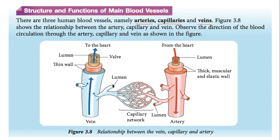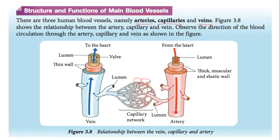The artery receives oxygenated blood from the heart and transports it to the rest of the body. The capillary connects the artery and vein. At the capillary network, gaseous exchange and nutrient transfer occur because capillaries surround the body cells. The capillary receives oxygenated blood from the artery, and oxygen diffuses into the body cells for cellular respiration. Carbon dioxide produced is transported back to the blood through the capillary, and the deoxygenated blood is carried back to the heart through the vein.